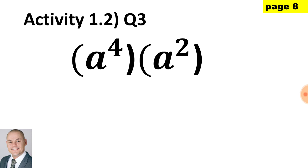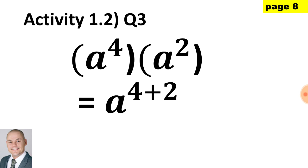In question 3, inside the brackets we have the same base of a multiplied by a. When multiplying bases that are the same we would add the exponents, therefore a to the 4 plus 2, and that would give us a to the 6.